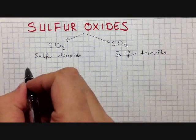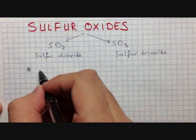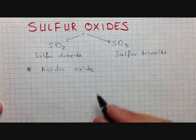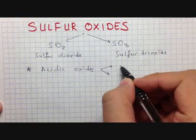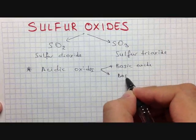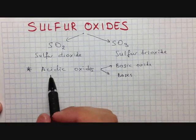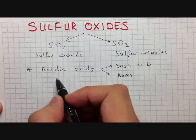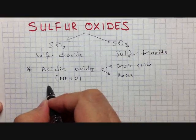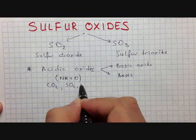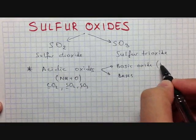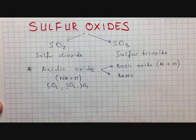Both of them are acidic oxides. This means they can react with basic oxides and bases. As a reminder, acidic oxides consist of a non-metal plus oxygen — like carbon dioxide, sulfur dioxide, and sulfur trioxide. Basic oxides are metal plus oxygen.